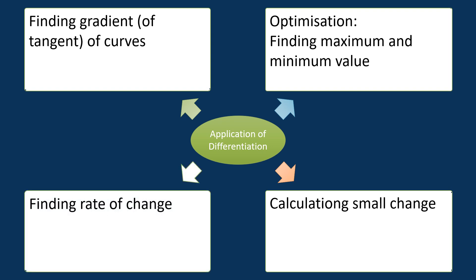Finding rates of change. Another important application of differentiation is finding rates of change. For instance, in physics, differentiation is used to find the acceleration of an object, which is the rate of change of its velocity over time. These are just a few examples of the many applications of differentiation.